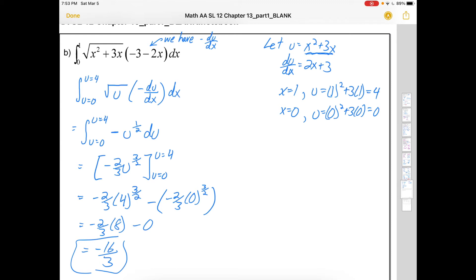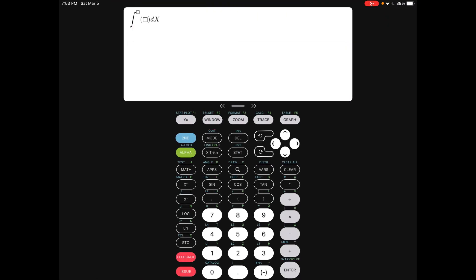We can double check this on a GDC. And on the GDC I'm just going to put it in as the original question was. So it was 0 to 1 of the square root of x squared plus 3x. And that was multiplied by negative 3 minus 2x. Okay. And I've got a bunch of brackets. I close them off. Negative 5.333. That's negative 16 thirds. Perfect. We can double check that if we're not sure. Negative 16 thirds. Bam.